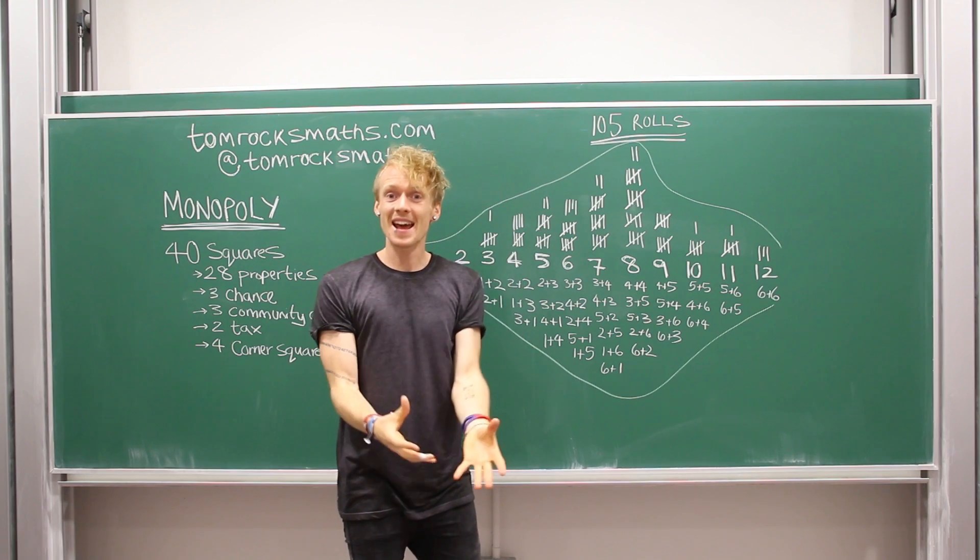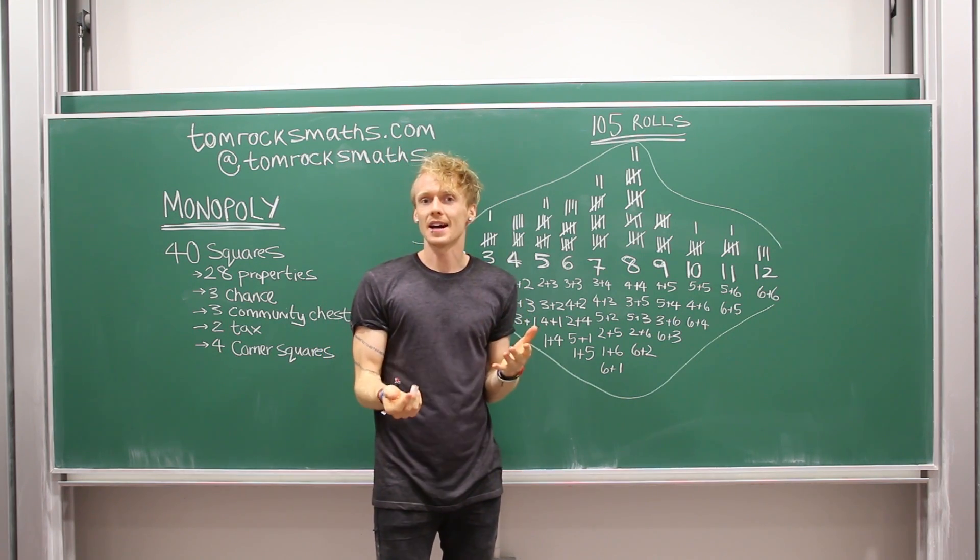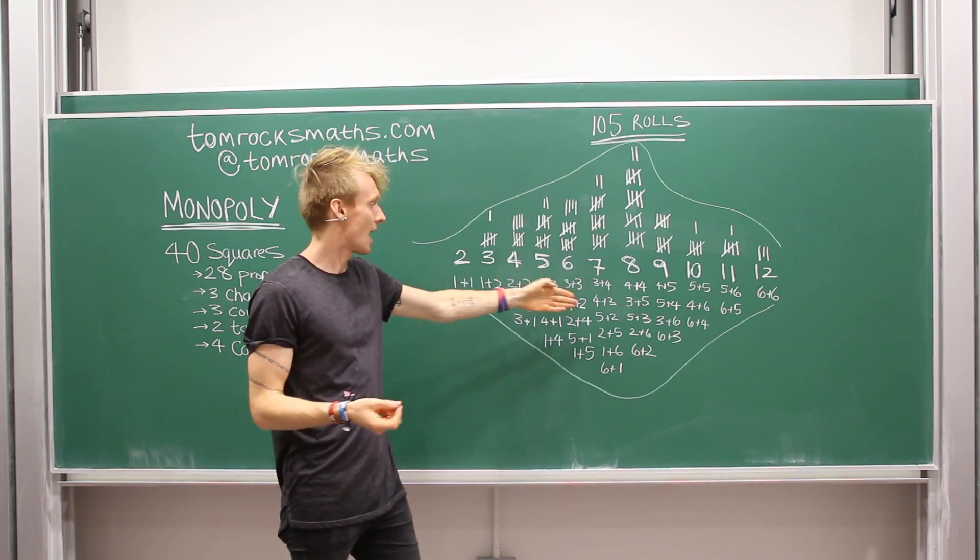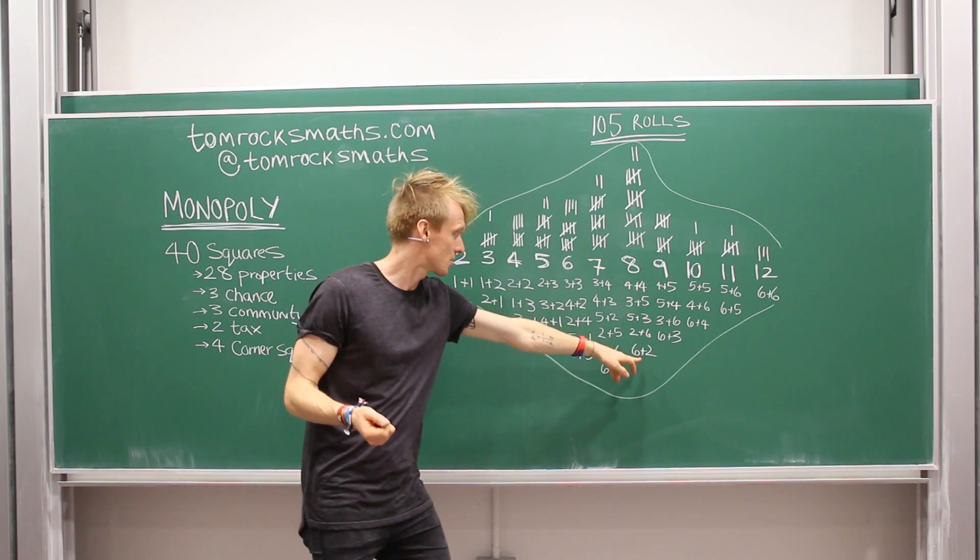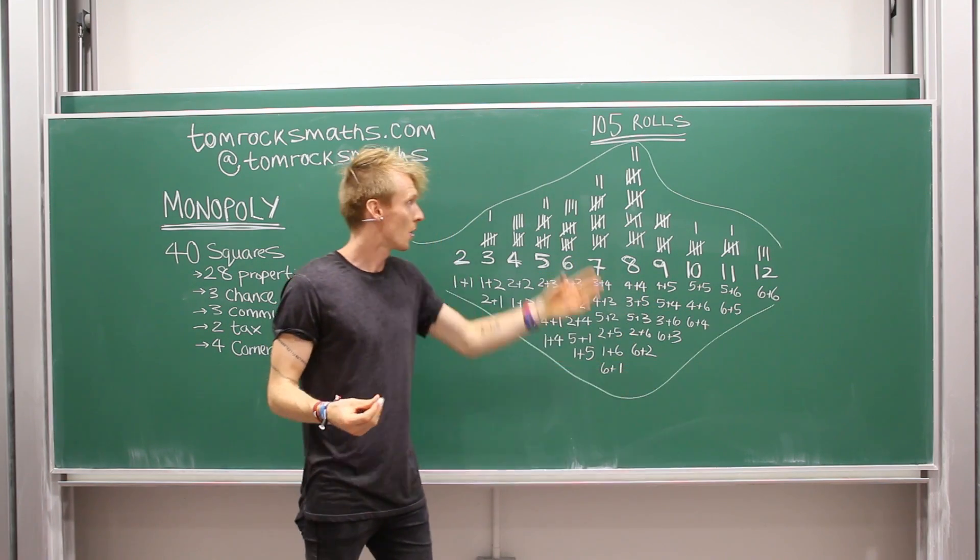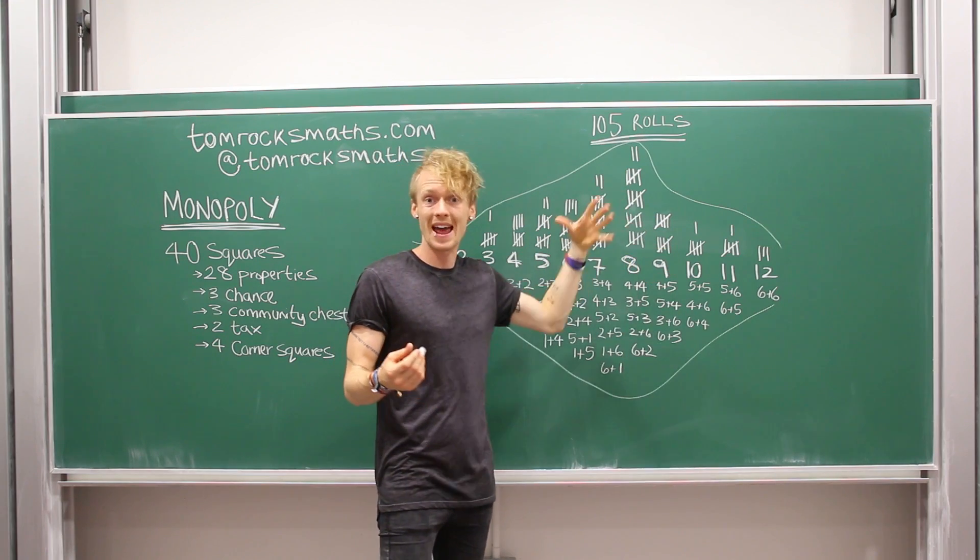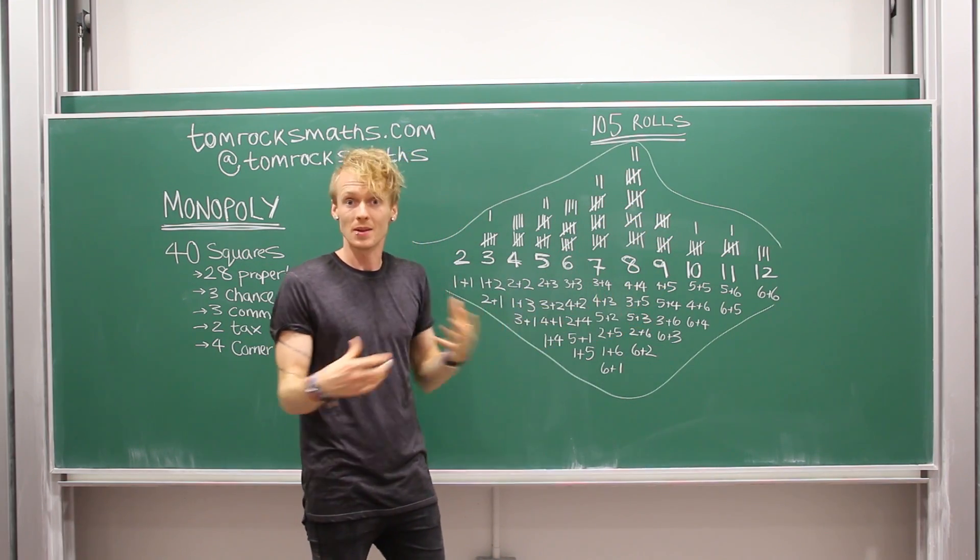But the next most likely roll of the dice are six and eight. They both have five possible ways of making six and eight with two dice. We actually saw in my experiment that eight was the most popular. So it's a good bet.